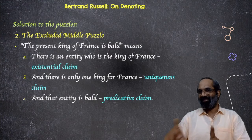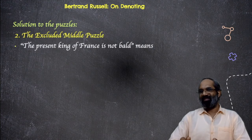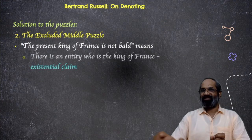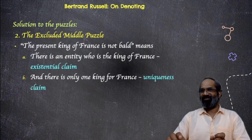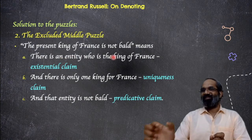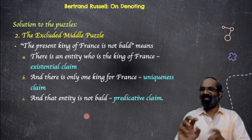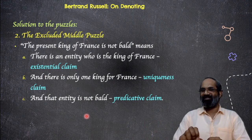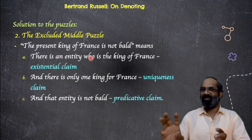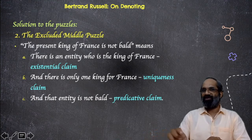So three claims: there is a king of France — the existential claim; there is only one king of France — the uniqueness claim; and that king is bald — the predicative claim. If we apply this theory to the statement 'the present king of France is bald,' we are asserting three things. There is a present king, which is actually false; there is only one king; and that king is bald. Since this is a conjunctive statement — a conjunction of three statements A and B and C — if one conjunct is false, the whole statement is false. The existential claim 'there is a king of France' is false, so the statement 'the present king of France is bald' is false.